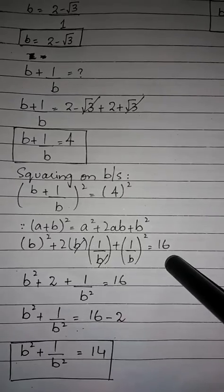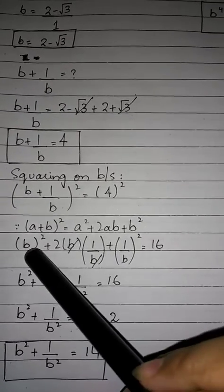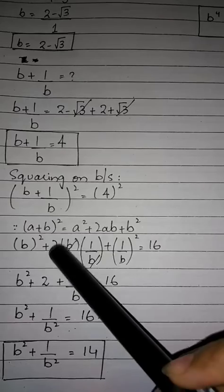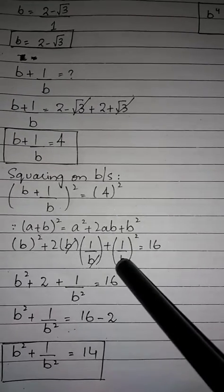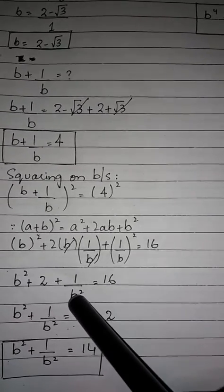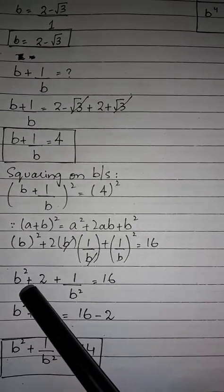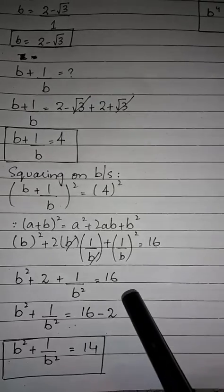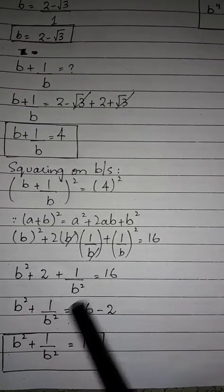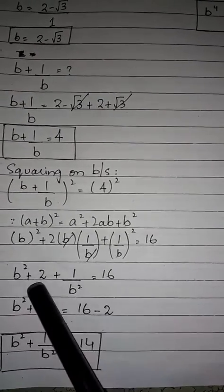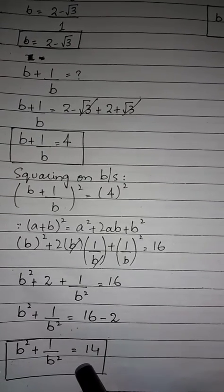4 squared is 16. The b cancels in the middle term, giving 2 multiplied by 1 equals 2. And 1 squared is 1. So we have b squared plus 2 plus 1 over b squared equals 16. Moving the 2 to the right side: b squared plus 1 over b squared equals 16 minus 2, which equals 14.